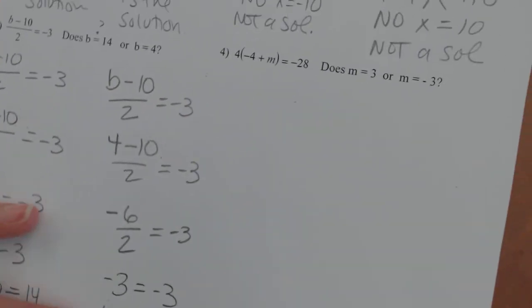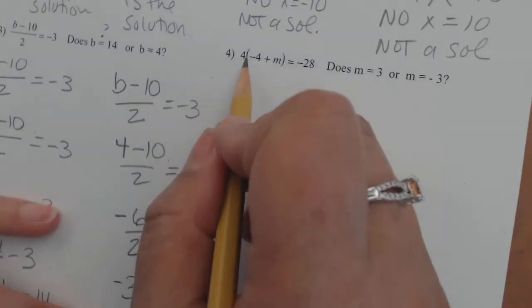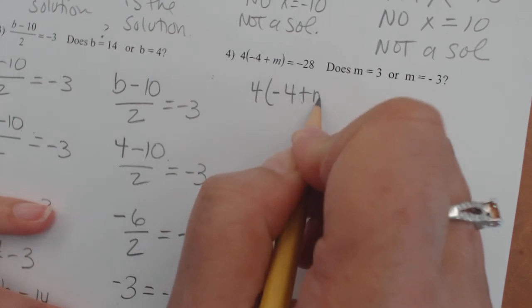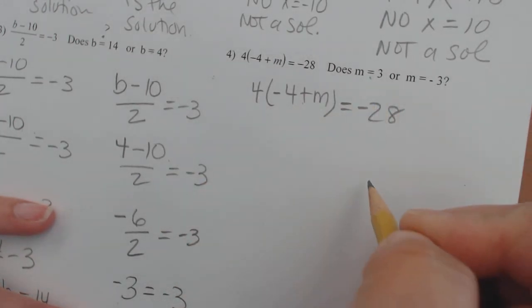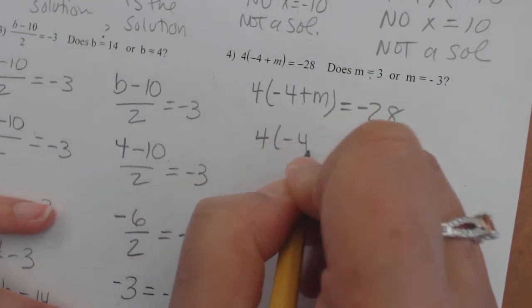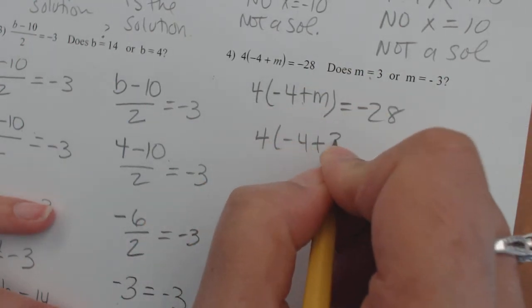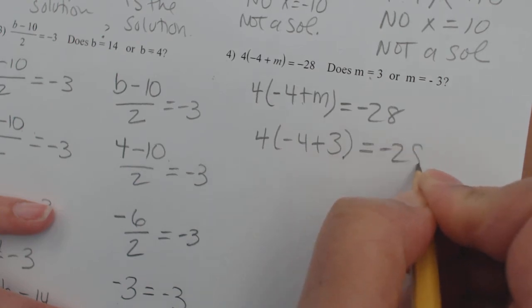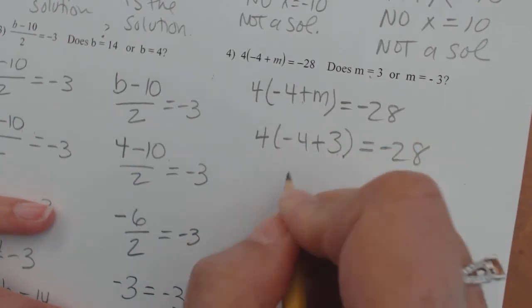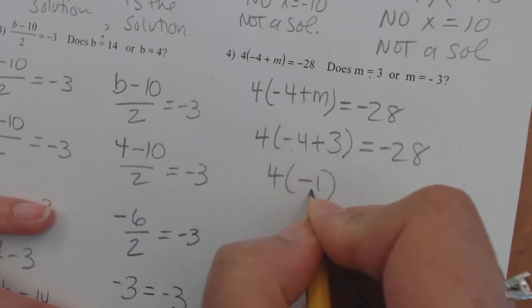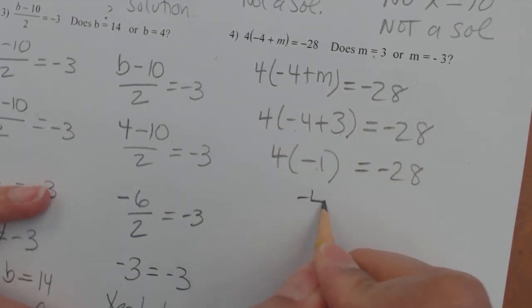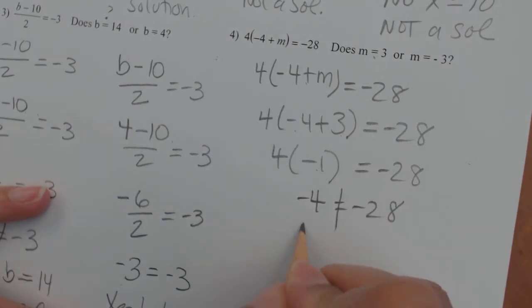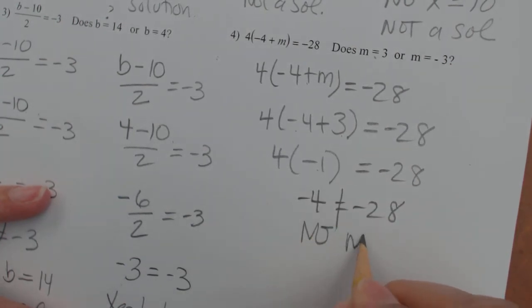Let's go on to the last one. 4 times the quantity negative 4 plus m equals negative 28. Let's try does m equal positive 3. 4 times negative 4 plus positive 3 equals negative 28. Let's do what's inside the parentheses. 4 times negative 1 because negative 4 plus 3 is negative 1 equals negative 28. I can already see it because when we multiply, we get negative 4 and that does not balance that out at all. So that is a no, m equals 3 is not a solution.